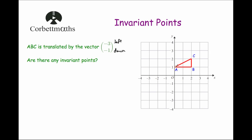Moving each point three to the left and one down: A moves, B moves, and C moves — the triangle is clearly all the way over there. None of the points will be in the same position because all the points are three squares to the left and one square down. So none of them are going to be invariant. Are there any invariant points? No.